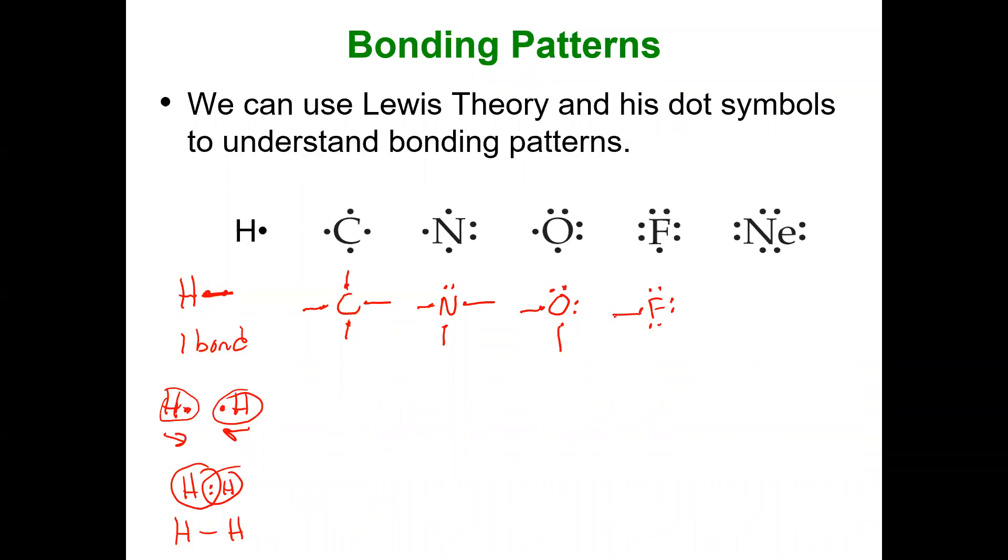And neon doesn't need anything because it has two, four, six, eight. It has an octet. All of these want octets. Well, if there's two electrons per bond, now carbon, by having four bonds, has an octet. Where did it get the four other electrons? Maybe a couple of hydrogens.